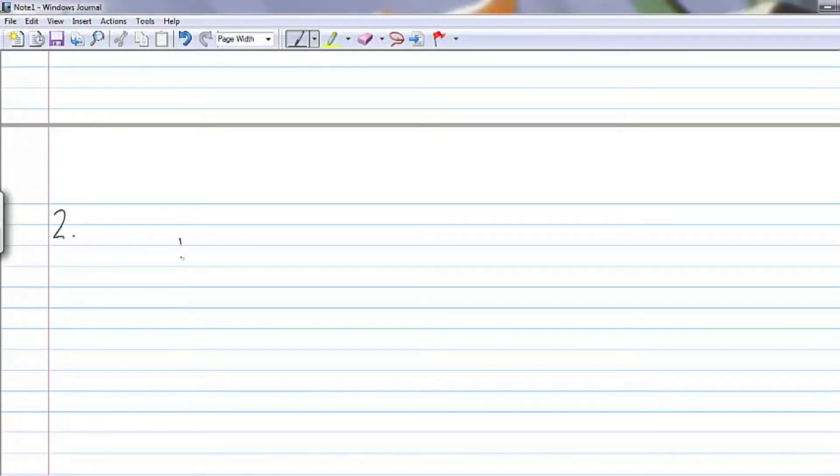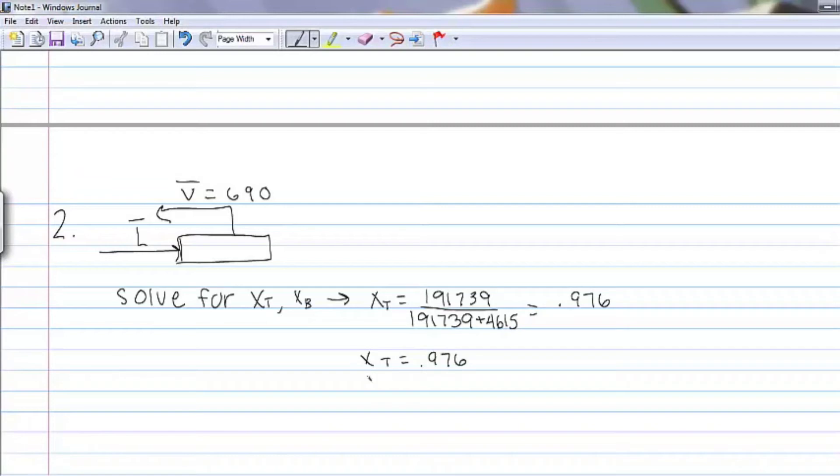Number two asks us to calculate how much steam per hour is required to reboil 690 moles per hour. We can label the feed as L bar for liquid and the exit as V bar for vapor. The first step is to calculate the mole fractions going in for both toluene and benzene. This is equal to the moles of toluene coming out of the bottoms, which we did in problem one, divided by the total moles of the bottoms product. The mole fraction of benzene is equal to 1 minus the mole fraction of toluene.